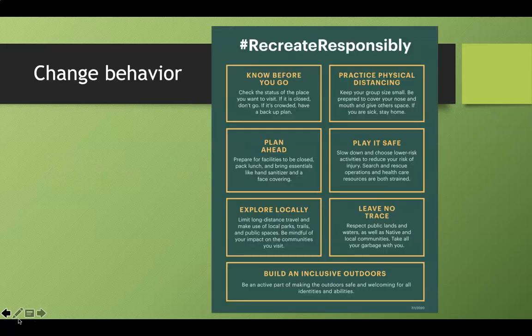So one example of changing folks' behavior might be for them to quote, recreate responsibly. So recreate responsibly, it's a coalition of land managers and for-profit folks and non-profit land management folks across the country who are trying to promote responsible recreation, especially in the time of COVID. So basically, we want people to know these seven different things when they're or before they are recreating, right? So know before you go, check the status of a place you want to visit, practice physical distancing or social distancing, we want folks to plan ahead, we want people to play it safe, we wanted people to explore locally, to leave no trace, and to build an inclusive outdoors, which is kind of a broader goal of recreate responsibly, right?